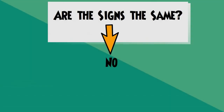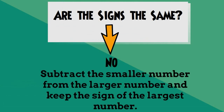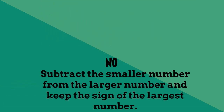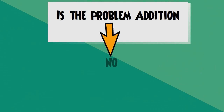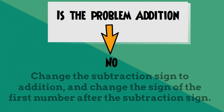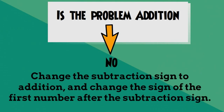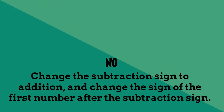If you answer no to 'are the signs the same,' subtract the smaller number from the larger number. If you answer no to 'is the problem addition,' change the subtraction sign to addition and change the sign of the first number after the subtraction sign, and then follow the addition rules.